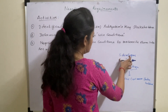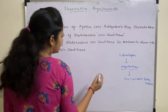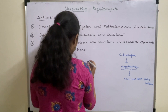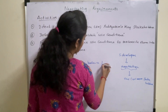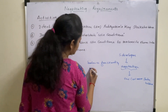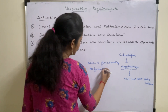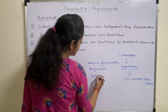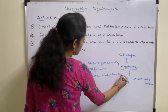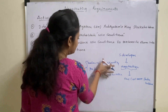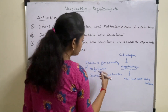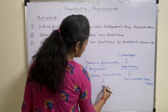During this negotiation, stakeholders are asked to balance functionality, performance, and other system characteristics. These three things should be negotiated against time and cost.